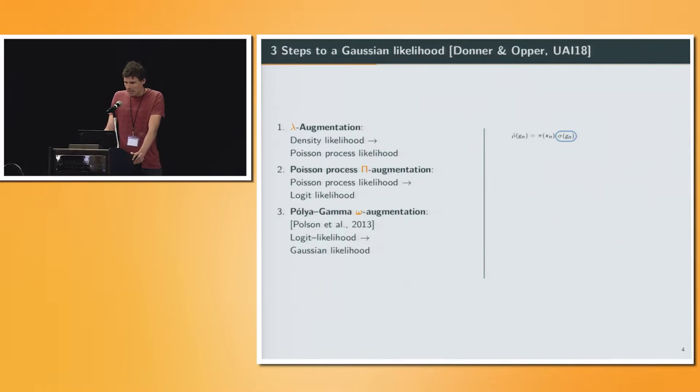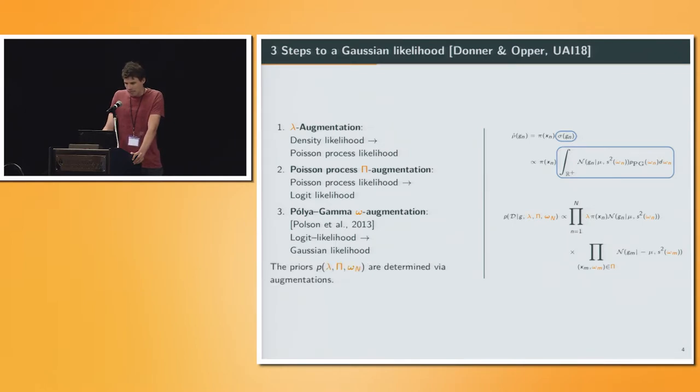And then what remains is the non-linearity, the sigmoid, depending on the function g. We use the Polya-Gamma augmentation scheme found by Polson and L, which allows us to write the sigmoid as an infinite Gaussian mixture, and hence we achieved our Gaussian likelihood, which is now conjugate to the GP prior. We have these three sets of latent variables now, where the priors of these variables are determined by the augmentations itself.